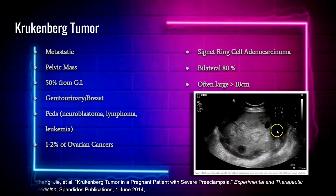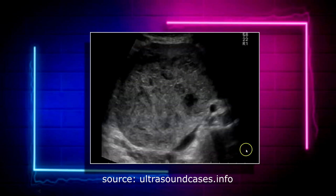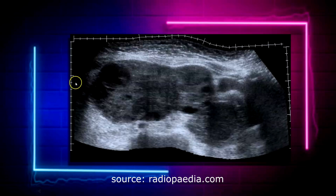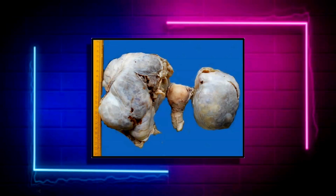Here you can see an example of the tumor in an ovary — it is very heterogeneous; you can still see some follicles within the ovary and then some heterogeneous tissue of mixed echogenicity. Here's another example of a large ovarian tumor that was a Krukenberg tumor, and here's another example in a panoramic view.